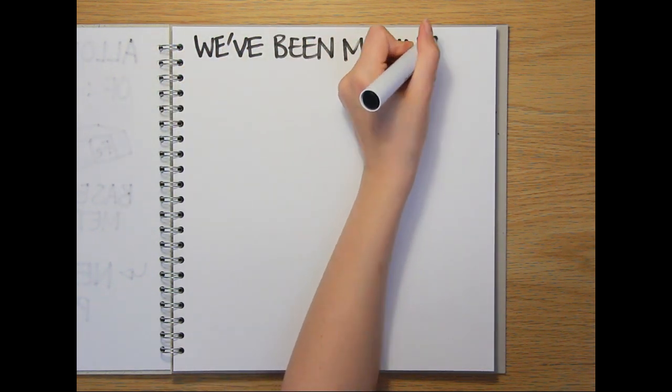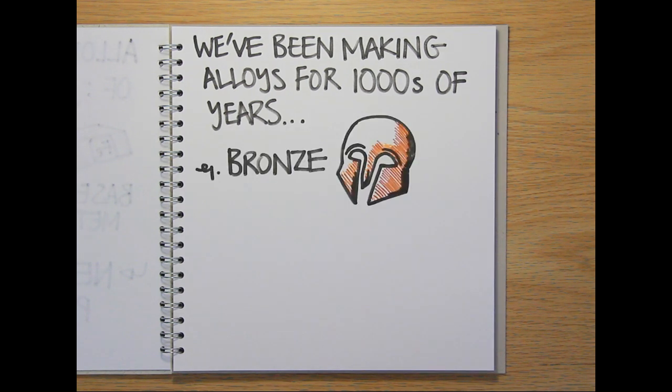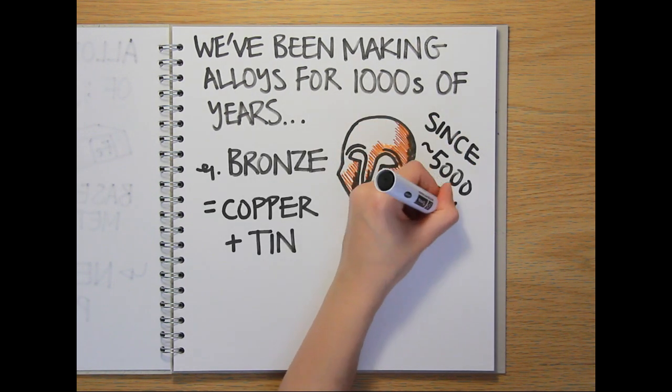And this technology isn't new. In fact, humans have been making and using alloys for thousands of years. The very earliest example is bronze, an alloy of copper and tin that started being produced around 5000 years ago.